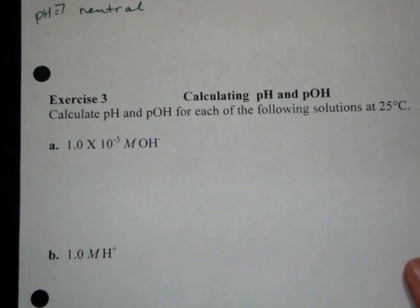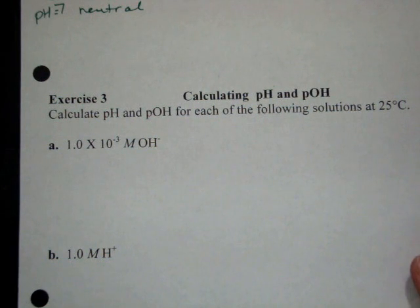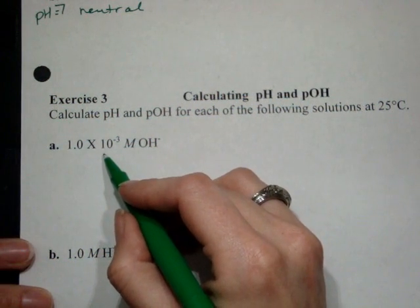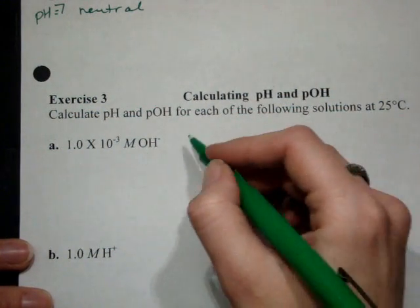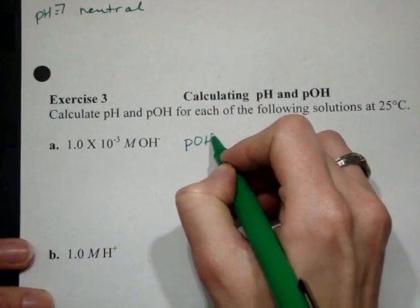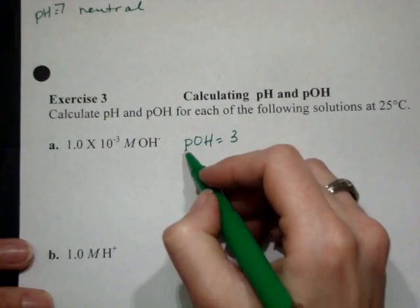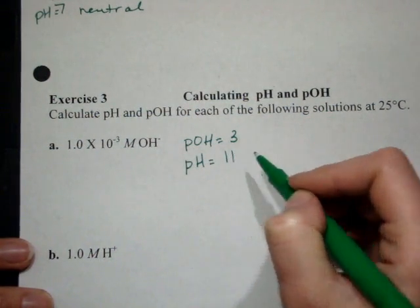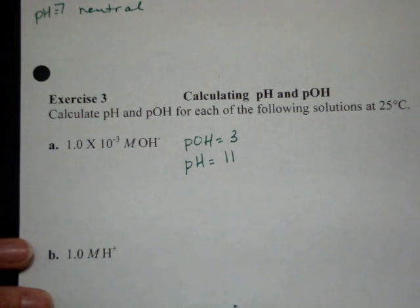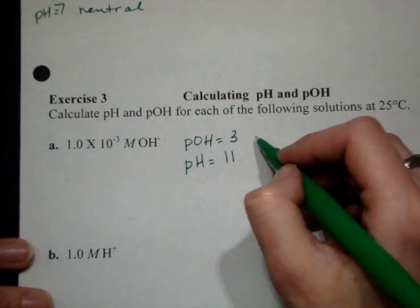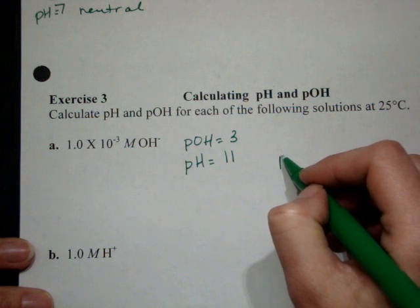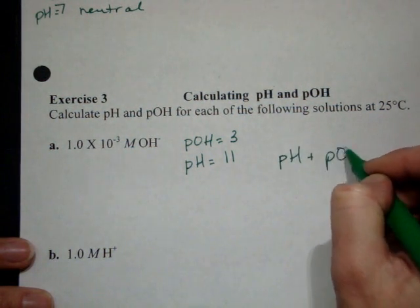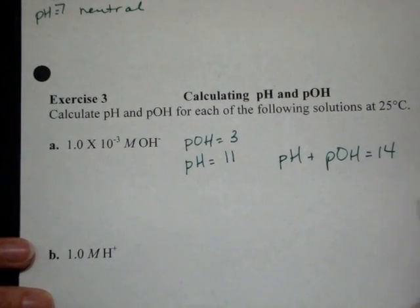Exercise 3 is very similar. Don't need a calculator probably for this one. You have 1 times 10 to the negative 3 molar OH minus, which would be a pOH of 3. And then would be a pH of 11. Because 3 plus 11 gives you your 14.